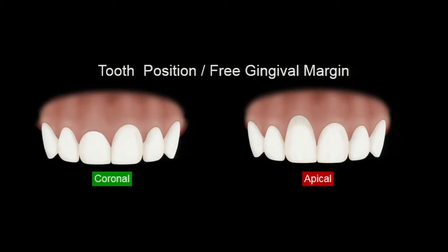Tooth position: let's say we're removing this right central incisor. This is good — we lose two millimeters, we're right where we want to be with our desired free gingival margin. This is very bad, because what's going to happen to that tissue? It's going to get worse.